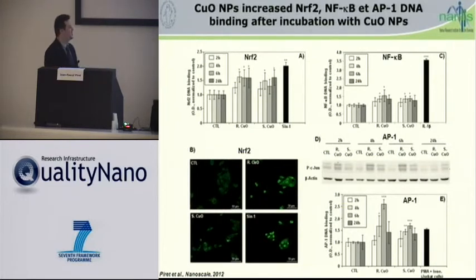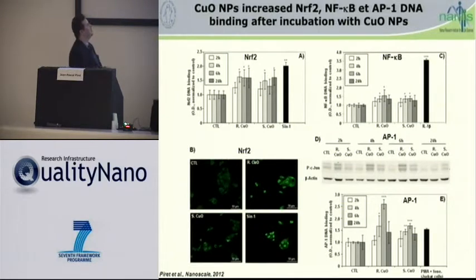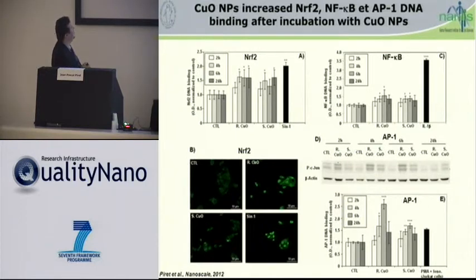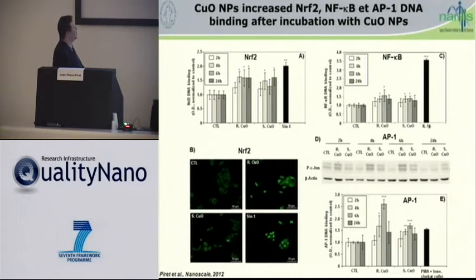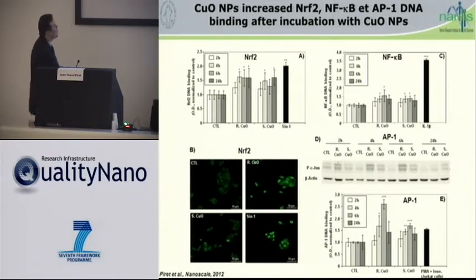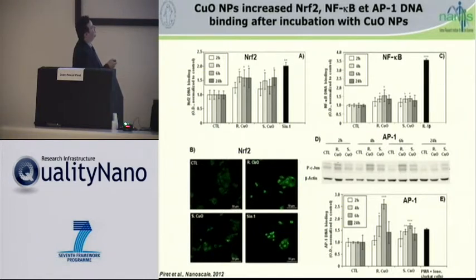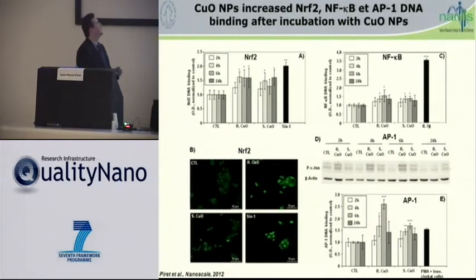As we observed that copper oxide nanoparticles induce oxidative stress, we wanted to know whether redox-sensitive transcription factors could be activated, like NRF2, NF-κB, and AP1. We determined the effect of exposure on the activation of these transcription factors by measuring their DNA-binding activity. For NRF2, we observed activation between 4 and 24 hours, confirmed by immunofluorescence following nuclear translocation. Concerning NF-κB and AP1, we observed transient activation between 4 and 6 hours for both nanoparticles.